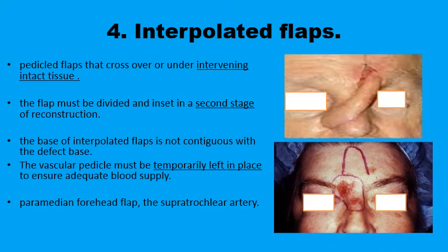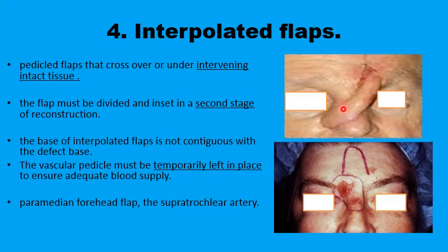Interpolated flaps are those in which the flap has to cross over an intact bridge of skin to reach its destination. An example is the paramedian forehead flap. The origin is in the forehead, centered over the supratrochlear artery. It has to cross over intact skin to cover a defect in the nose. The flap is sutured over the defect and left until new vascularization takes place, then at the second stage it is released from its origin and that area is repaired.